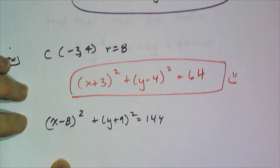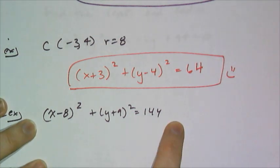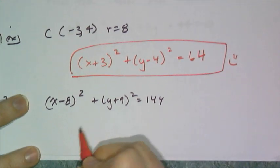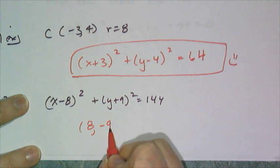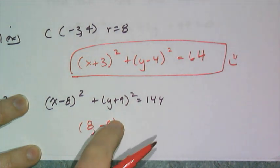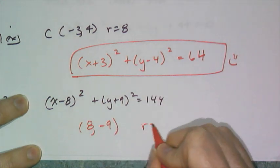On to the second basic level example of circles. I give you the equation, now I need to find the center and the radius. The center is (8,-9). The only tricky part is making sure you get the sign right on the y coordinate. Then I have to square root 144 to get my radius of 12.